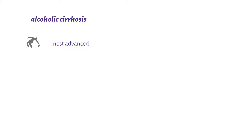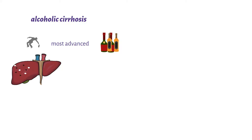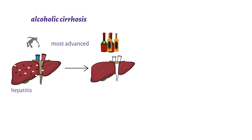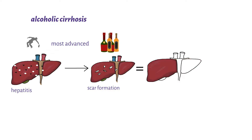Alcoholic cirrhosis can also occur with heavy long-term consumption, and it is the most advanced form of liver damage as a result of alcoholism. With prolonged alcoholism, there is tissue damage from hepatitis and scar formation as the liver tries to heal itself. With heavy drinking, this continuous cycle results in thick, fibrous scars — termed fibrosis of the liver.